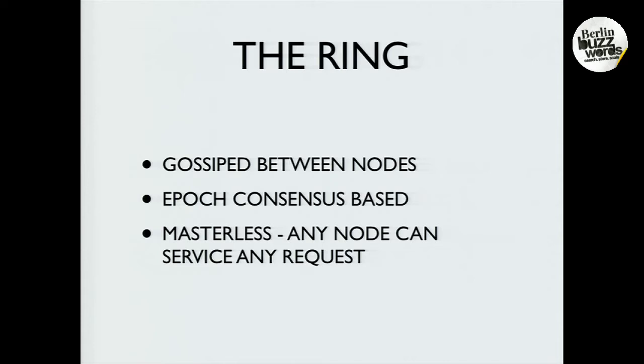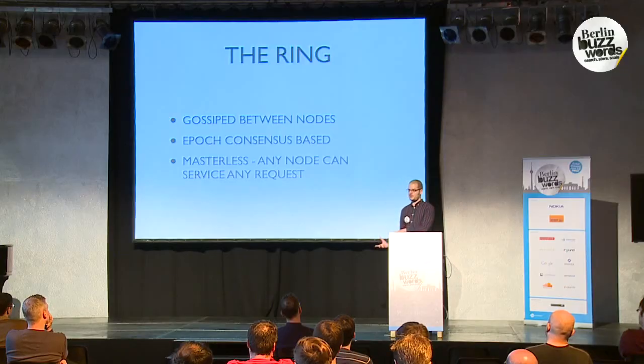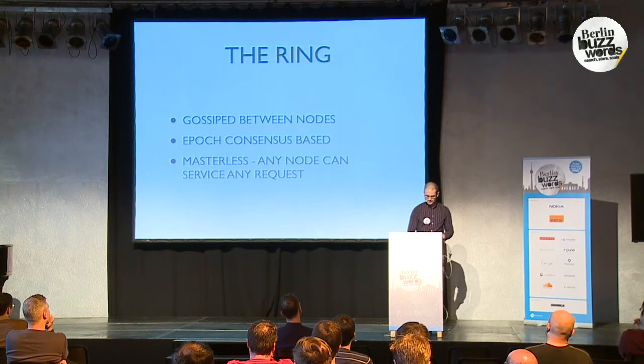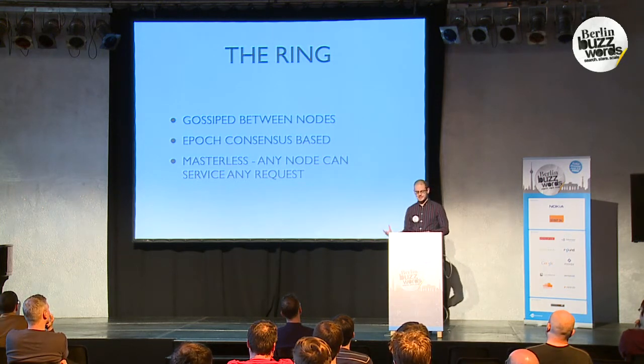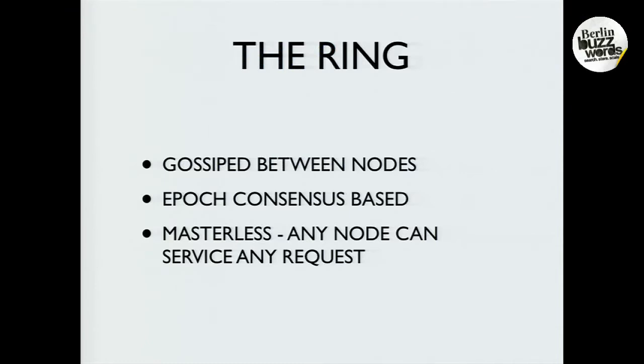The ring is the state structure that is gossiped between nodes. It has epoch-based consensus — when a node joins, a new ring is formed and that ring is gossiped around the cluster until an epoch, a monotonically increasing version, is hit. The reason you do that is so all the nodes agree on a certain event in time. And the other nice thing about the ring and consistent hashing is this is what makes it masterless — every node has the data structure and they all agree on it. Every node knows the algorithm to figure out what node owns the data, which is what allows any node in the system to deal with any read or write.